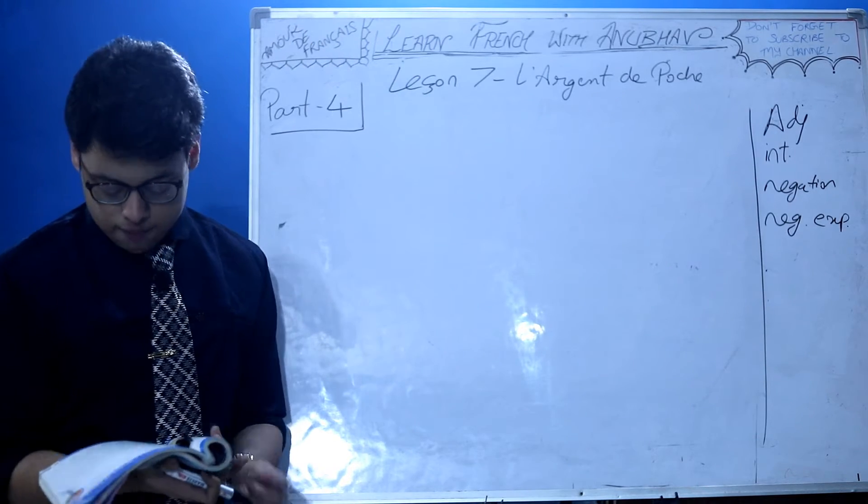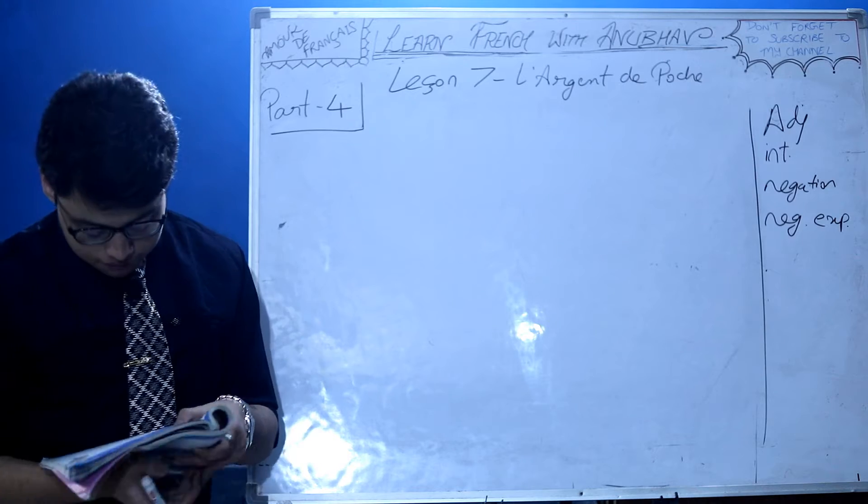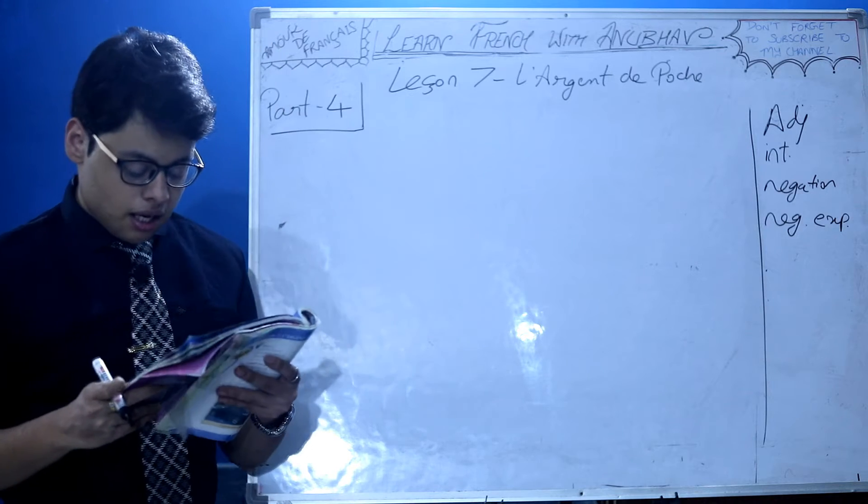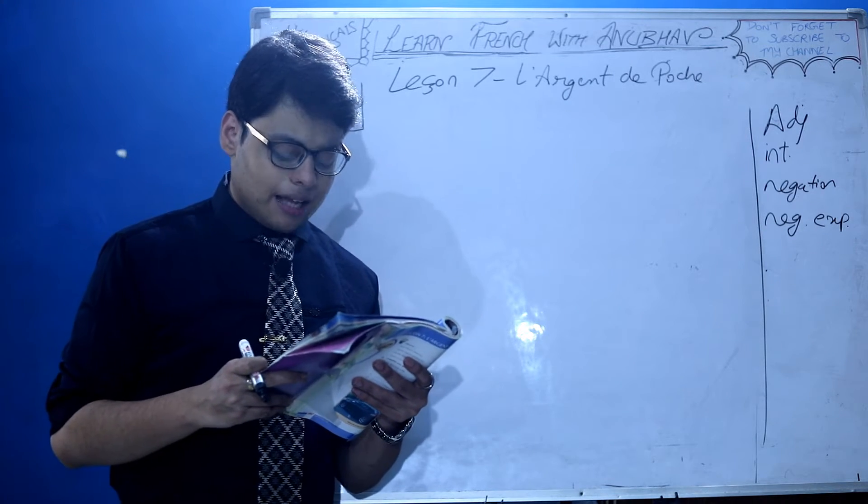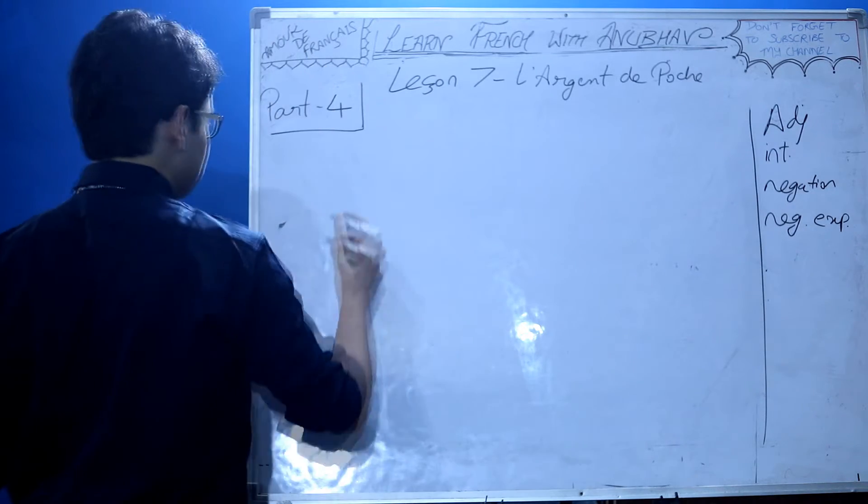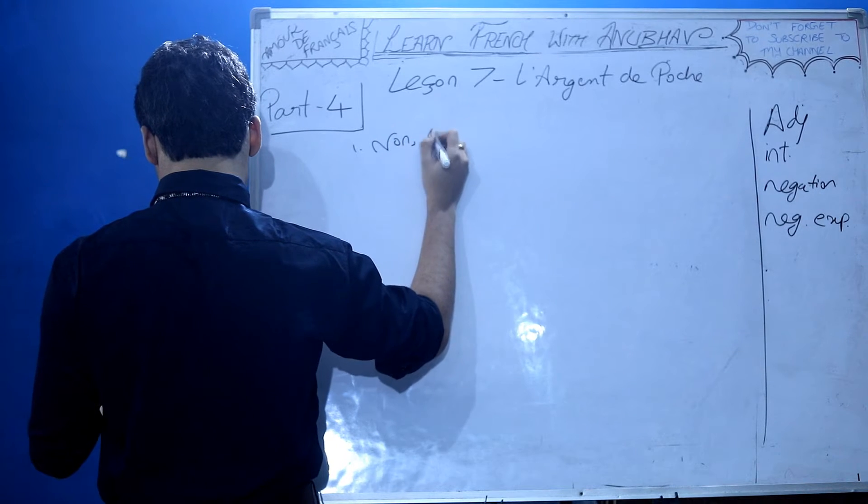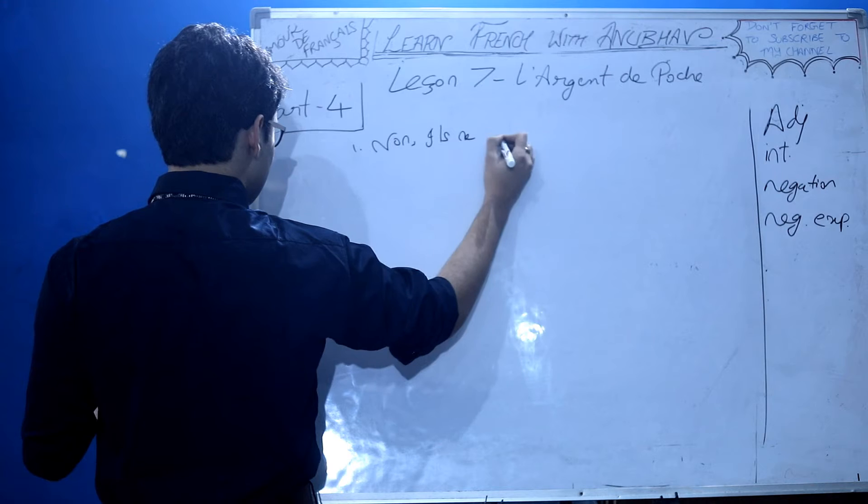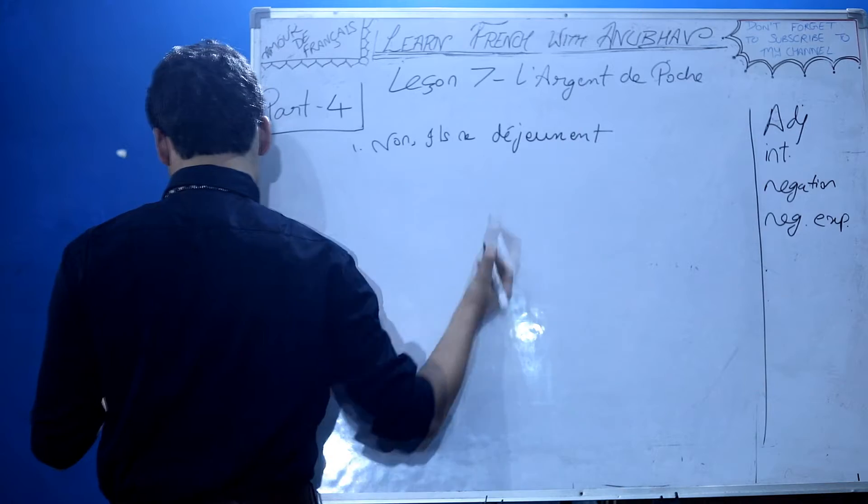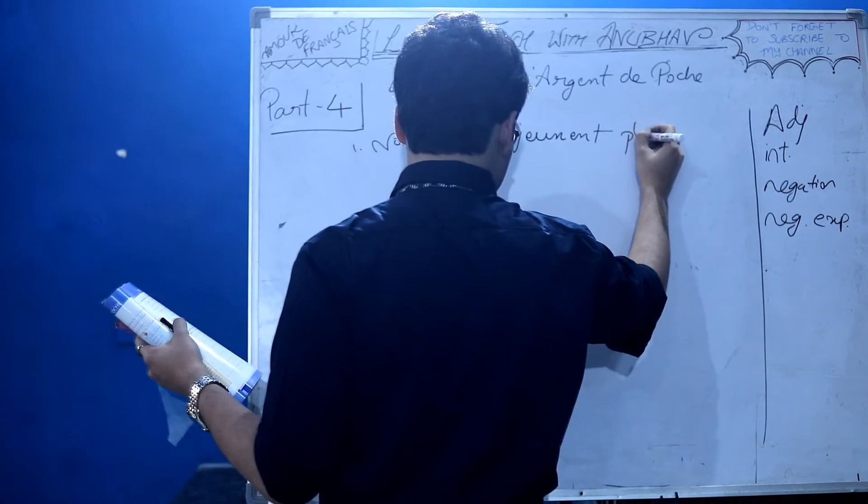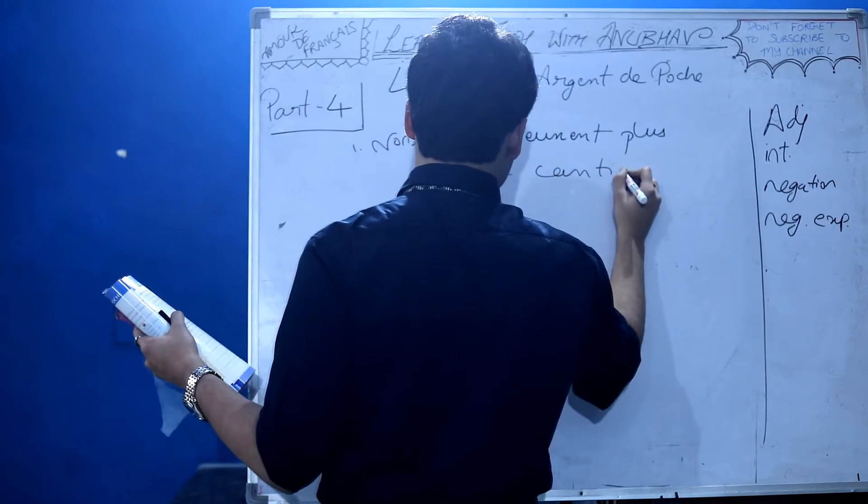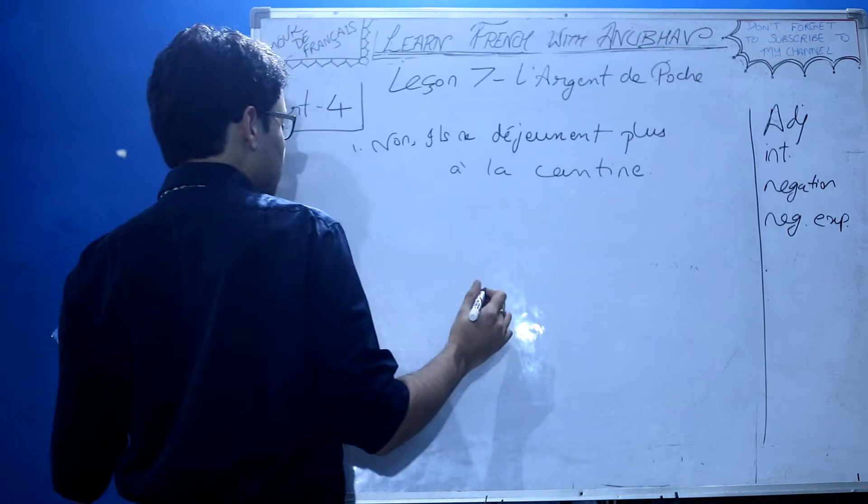First: Tes copains, est-ce qu'ils déjeunent souvent avec toi à la cantine? Do your friends often have lunch with you in the canteen? Answer: No. Ils ne déjeunent plus à la cantine avec moi. They don't have lunch with me in the canteen anymore.